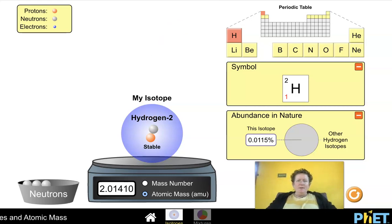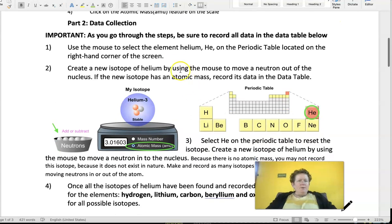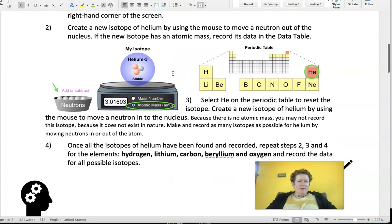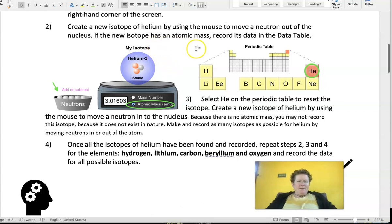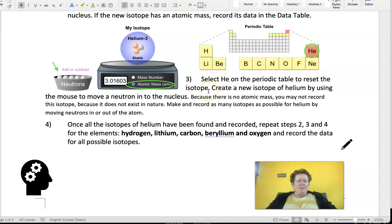Let's go back to our lab sheet here and look at our mission. We're going to use the mouse to select the element helium. Create a new isotope of helium by using the mouse to move a neutron out of the nucleus. If the new isotope has an atomic mass, record its data in the data table. If there's no atomic mass, you may not record the isotope because it does not exist in nature. If there's an amount, it's a valid isotope. If there's not an amount here, it's not a valid isotope and it doesn't count.